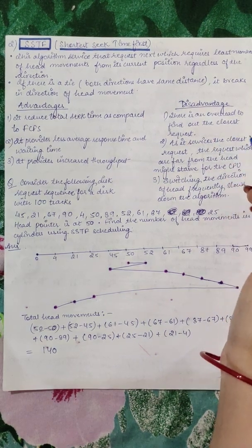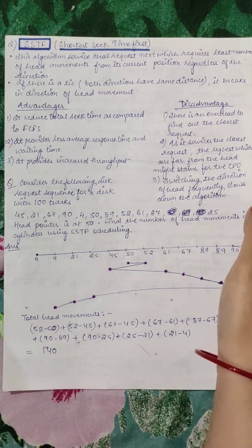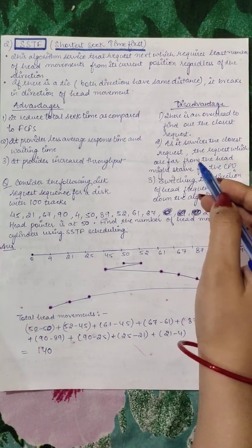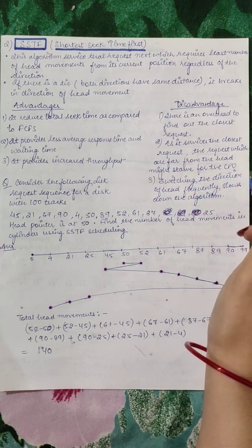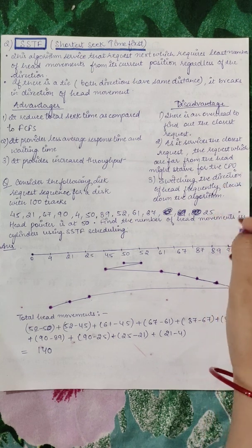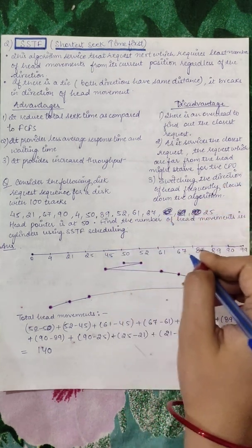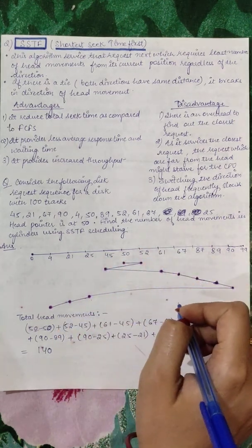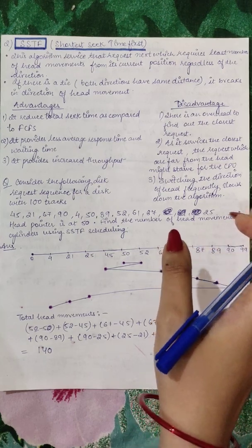Disadvantages mean there is an overhead to find out the closest request. How will you find out the closest request? As it services the closest request, the requests which are far from the head might starve for the CPU. So there might be a possibility of starvation. Because those requests are far, their turn will come very late. Because head is always going to the closest request, so it might keep on moving in between. In the corners, don't be careful of that. So there is possibility of starvation in the corners.